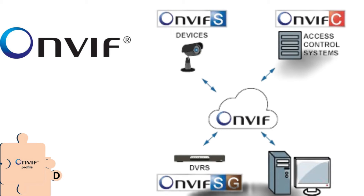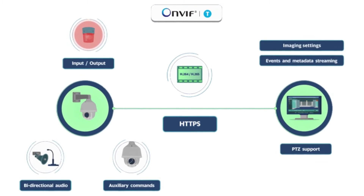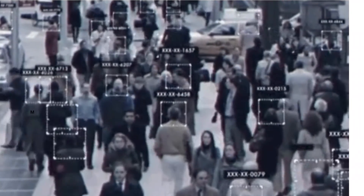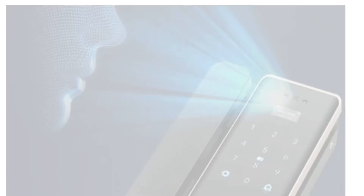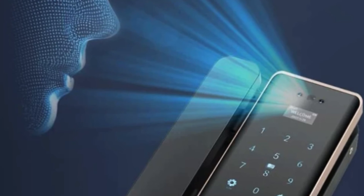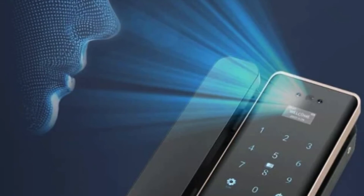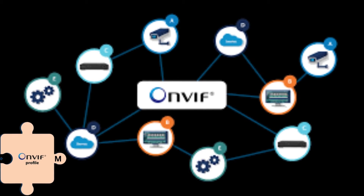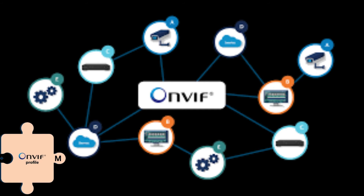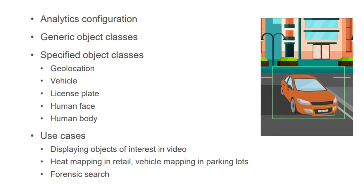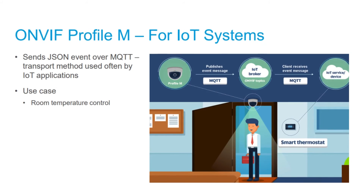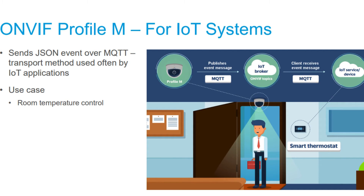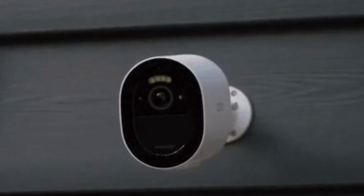Profile D also specifies interfaces for peripheral input and output devices. Input devices include biometric readers for fingerprint recognition, cameras for facial detection, token readers for guards and keys, keypads, and sensors for lock and door status. Output devices include locks, displays, and LEDs. Profile M is used for metadata and events for analytics applications — it has interfaces for generic object classification and specifies metadata for geolocation, vehicle license plates, human body, and human face.